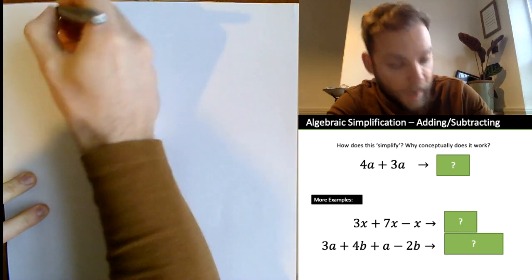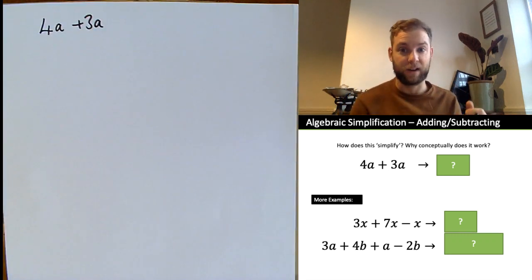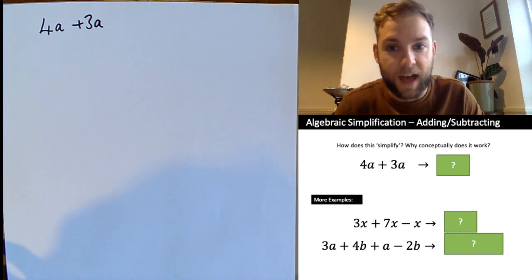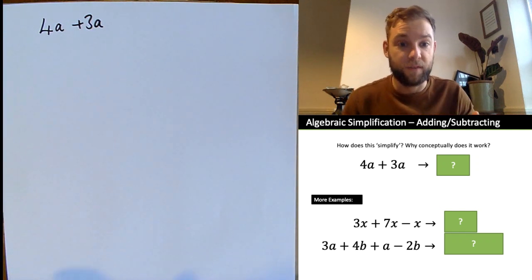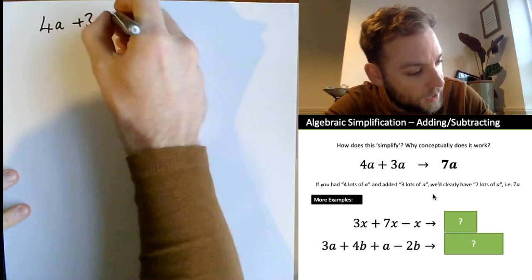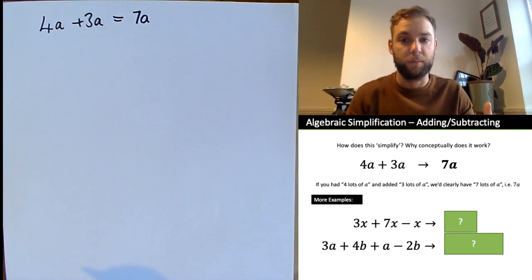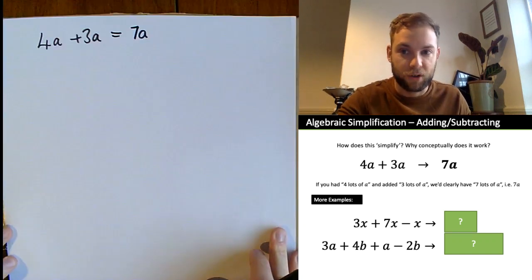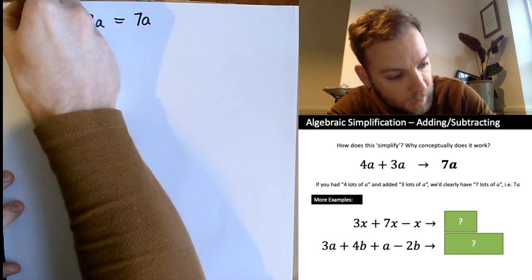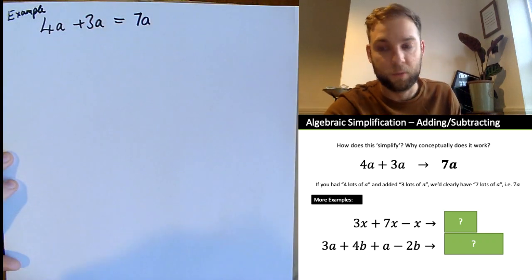So here we've got 4a plus 3a and we're trying to simplify this. It makes sense: if I've got 4 lots of a plus 3 lots of a, that should be 7 lots of a. So 4 lots of something plus 3 lots of something equals 7 lots of something. This is example one. The title today is simplifying algebraic expressions — this is actually called collecting like terms.